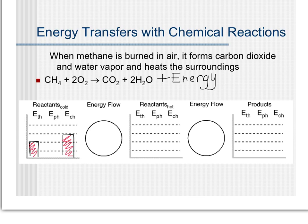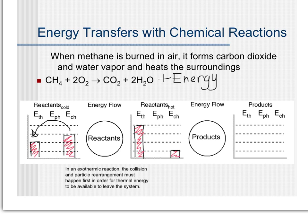First, we begin with the collision where the reaction happens and some of the chemical energy is transferred into thermal energy. So I'll make thermal energy up to four bars, and because chemical energy started at three bars and lost two bars to thermal energy, it has one bar of energy left. Now that the reaction has taken place, there's extra thermal energy, and the system is going to try to get back to the two bars of thermal energy it started with. So that energy is going to leave the system in the form of heat, and the system will end with one bar of chemical energy and two bars of thermal energy.